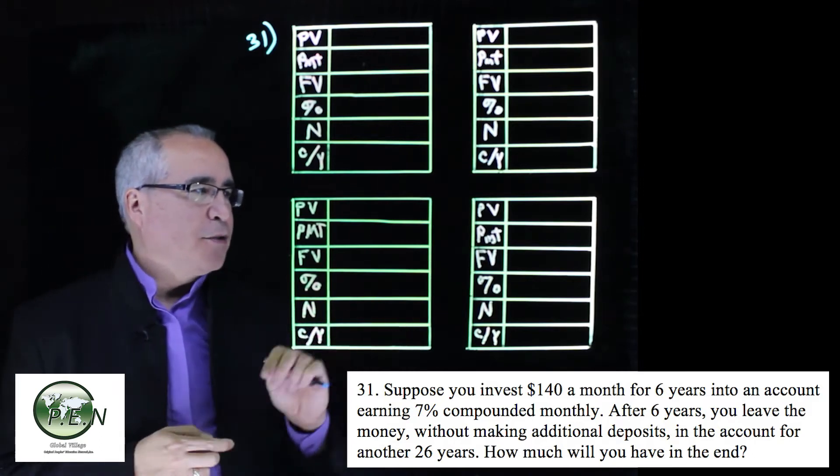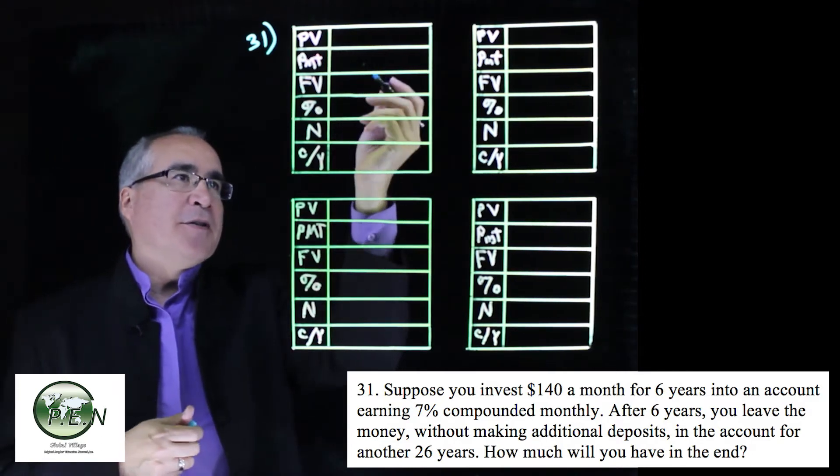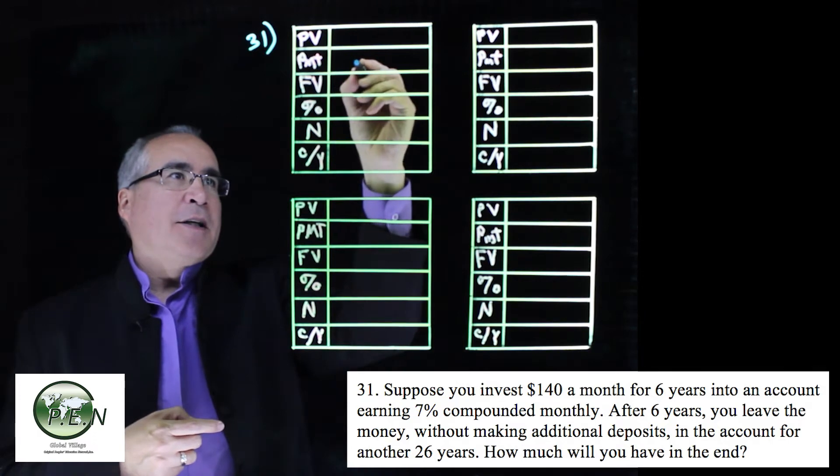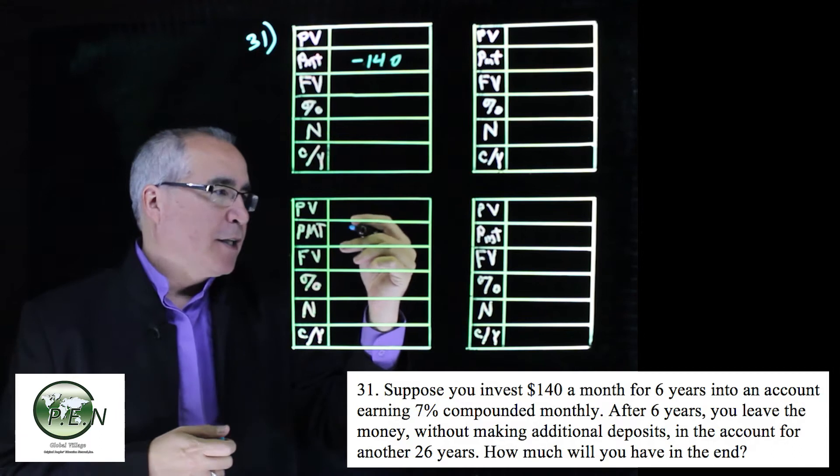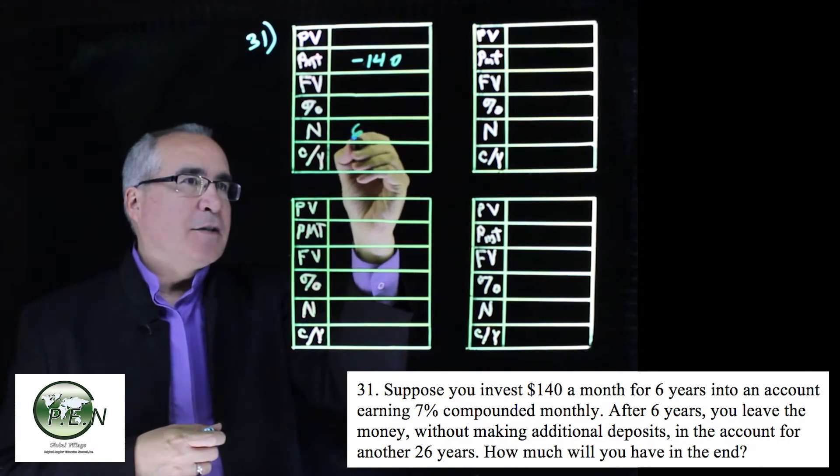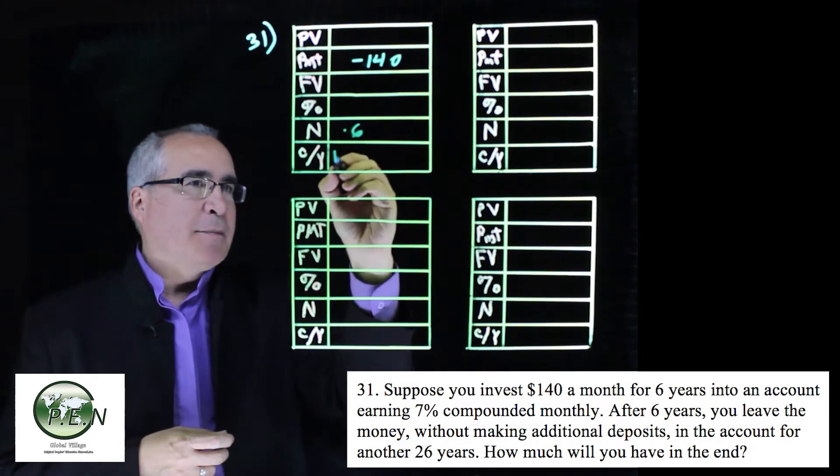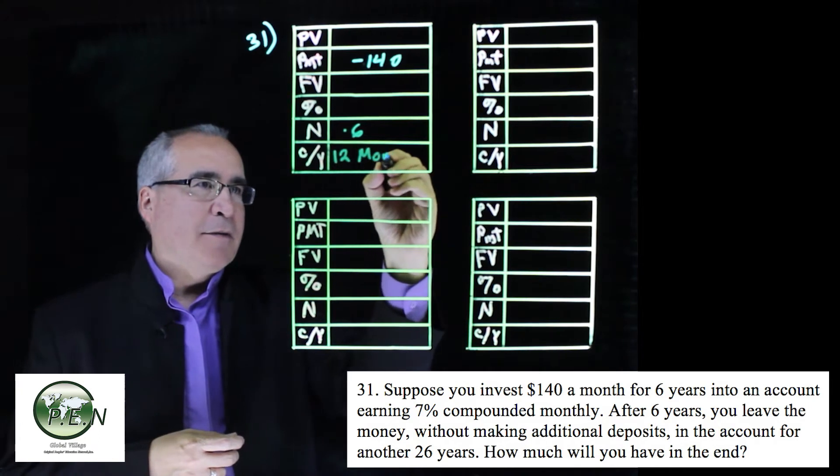Here's an example. Suppose you invest $140 a month for six years. So $140 a month, that's going to be a payment that we make to invest. We're going to do it for six years, and we're doing it monthly.